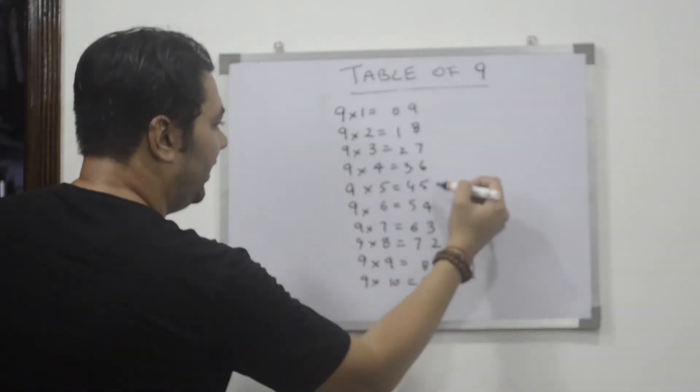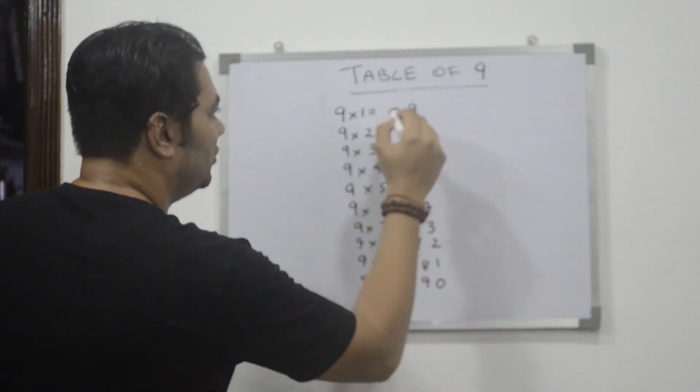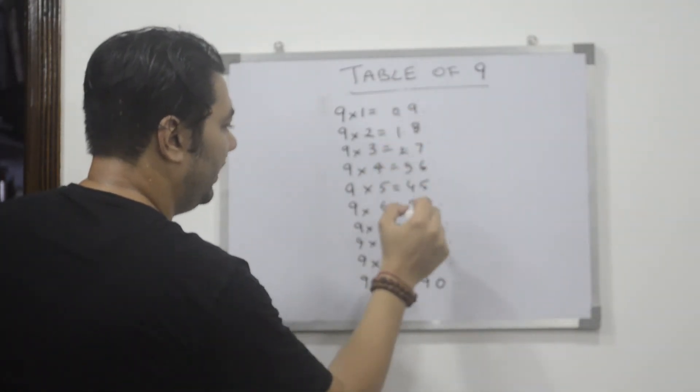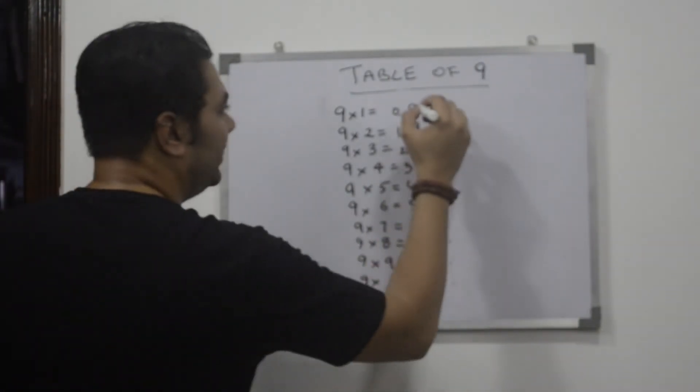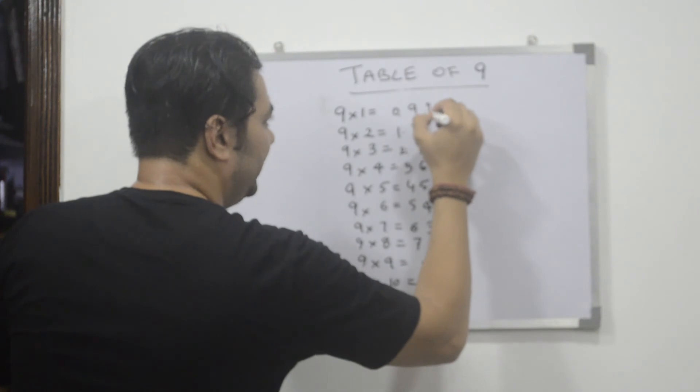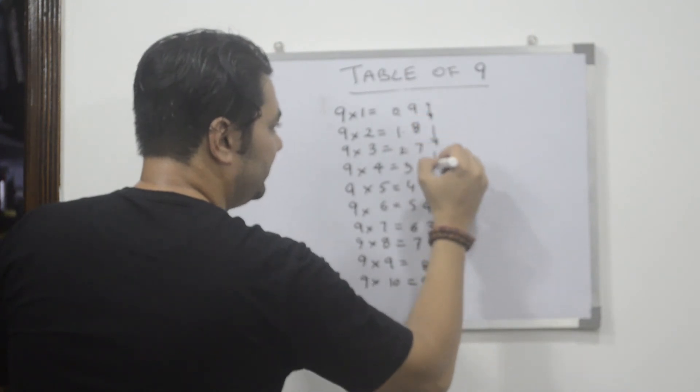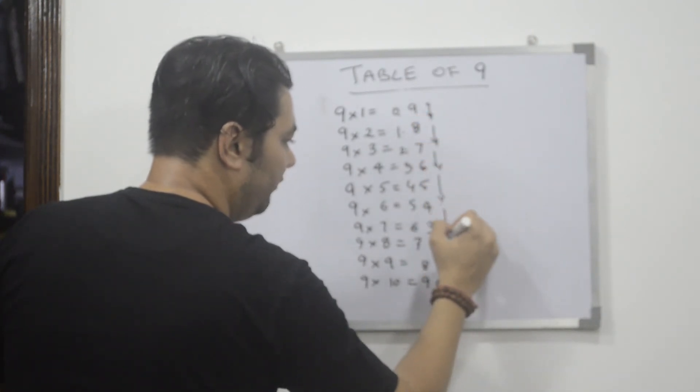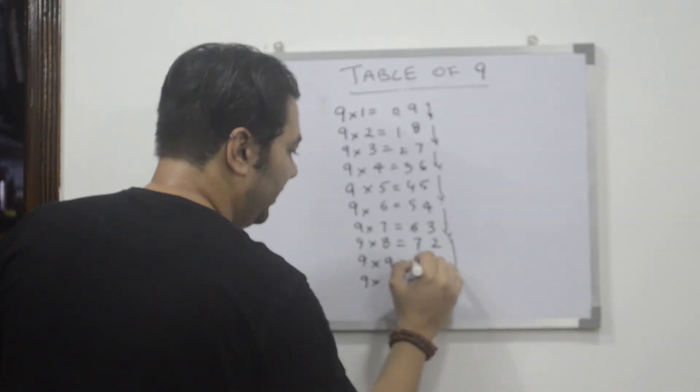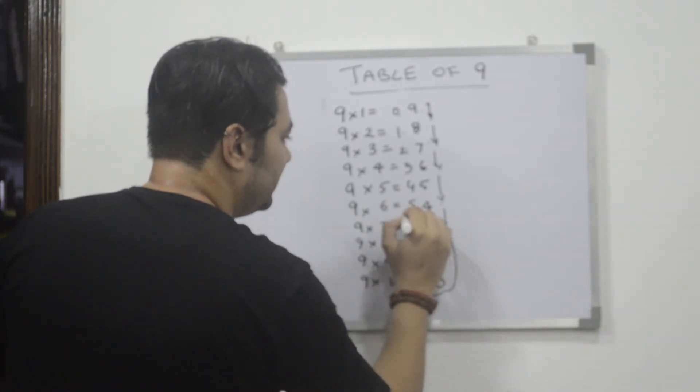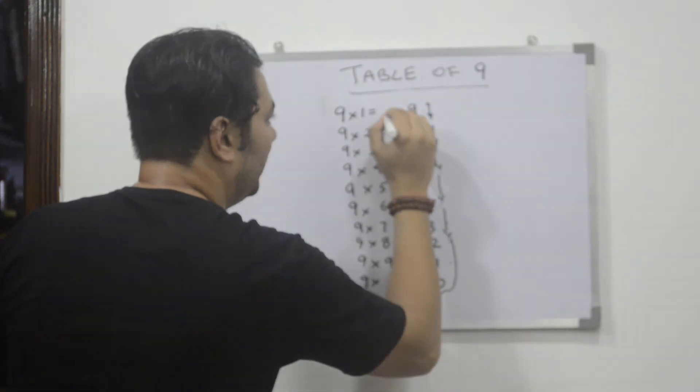Eight, seven, six, five, four, three, two, one, zero. Zero, one, two, three, four, five, six, seven, eight, nine.